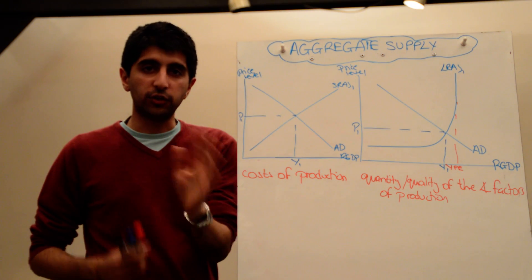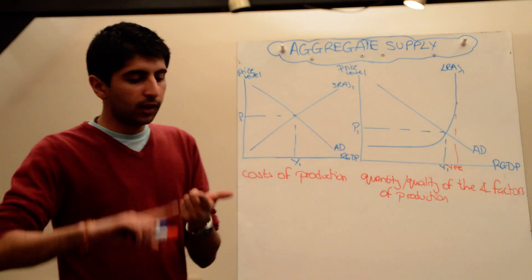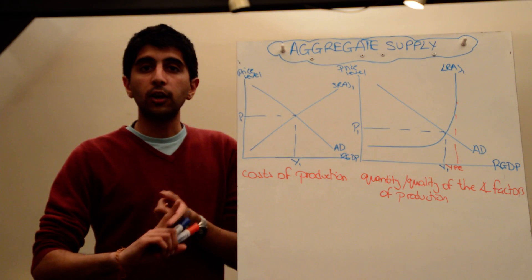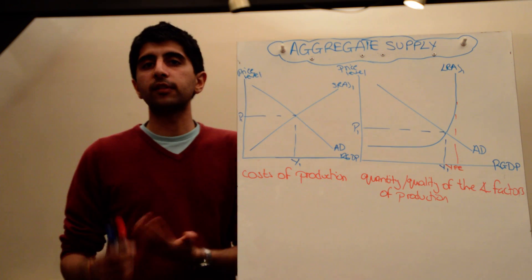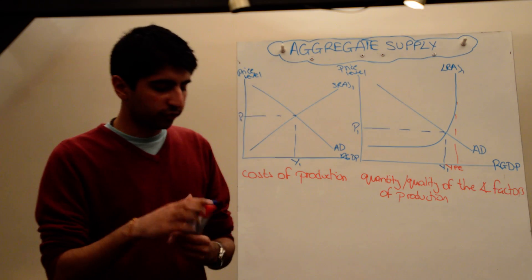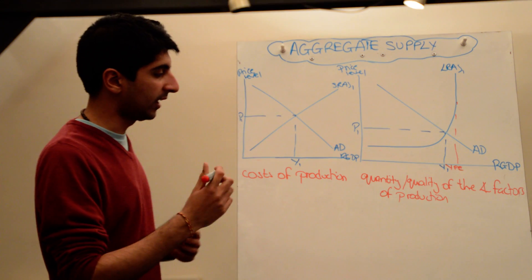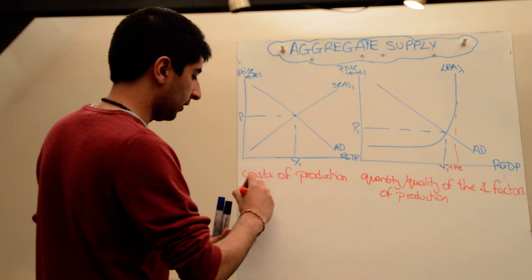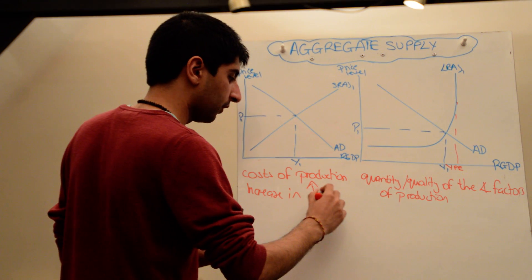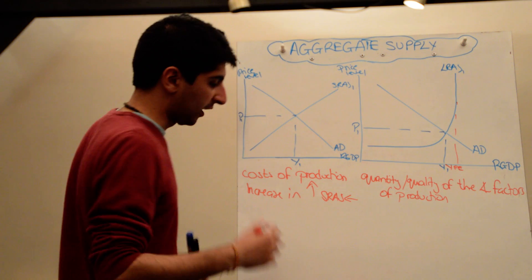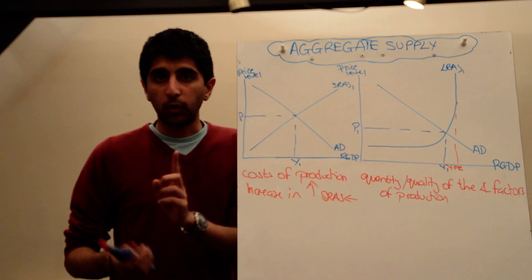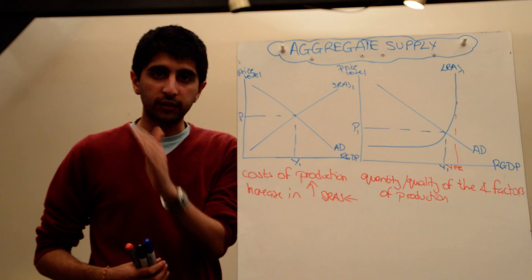There are four main ways in which the cost of production can be affected. First, if there is a change in the price of commodities — a change in the price of raw materials — that will impact cost of production. So an increase in the price of oil, for example, will shift short-run aggregate supply to the left. An increase in cost of production shifts SRAS to the left, and vice versa — a reduction shifts SRAS to the right.